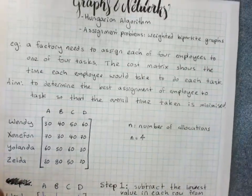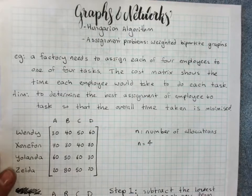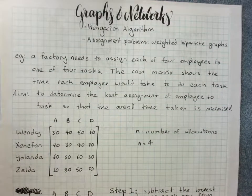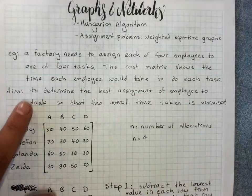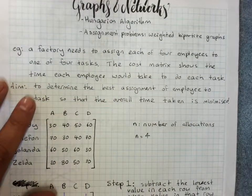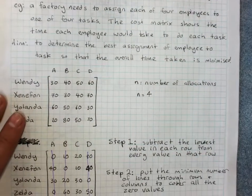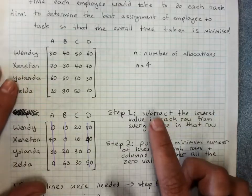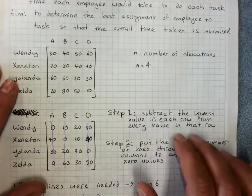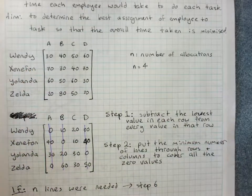Hello again, Hungarian Algorithm, just having a quick look at why it works. So if you're watching this you've just done my video on how to do the Hungarian Algorithm and our aim is to determine the best assignment of the employee to the task to get minimum time. And the first thing we do is we subtract the lowest value in each row from every value in that row. So let's have a closer look at what we're doing.